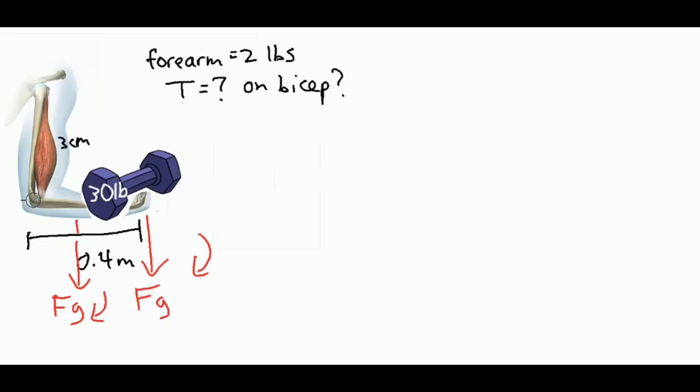Now on the other end, your bicep is counteracting those forces and it is trying to rotate the weight upwards. And while it's doing that, there's some tension being provided by the bicep in order to lift that dumbbell upwards.